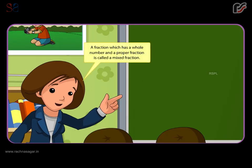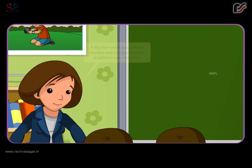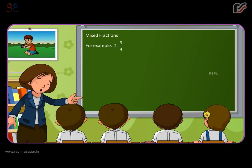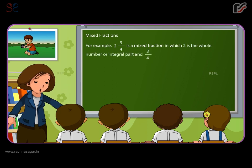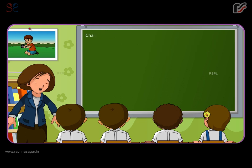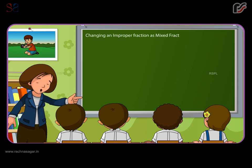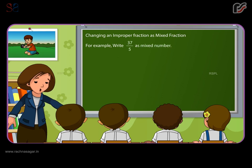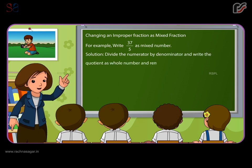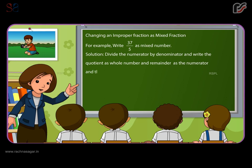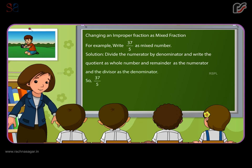Mixed fractions. A fraction which has a whole number and a proper fraction is called a mixed fraction. For example, two and three by four is a mixed fraction, in which two is the whole number or integral part and three by four is the fractional part. Changing an improper fraction to a mixed fraction: for example, write 37 by 5 as a mixed number. Divide the numerator by the denominator and write the quotient as the whole number, the remainder as the numerator, and the divisor as the denominator. So 37 by 5 is equal to seven and two by five.